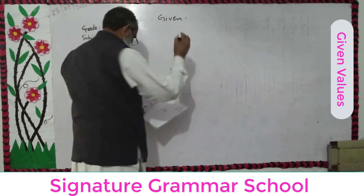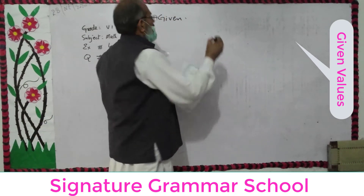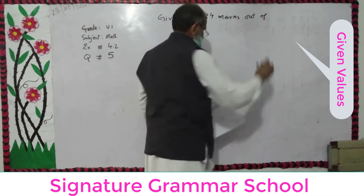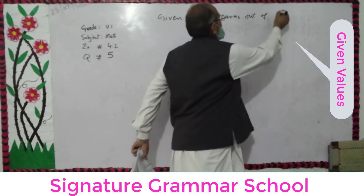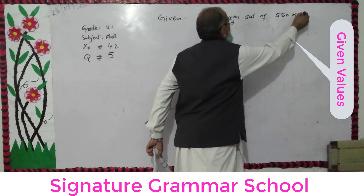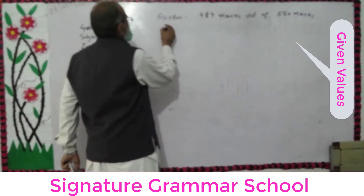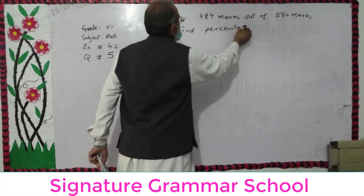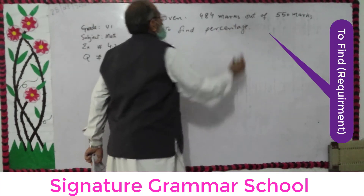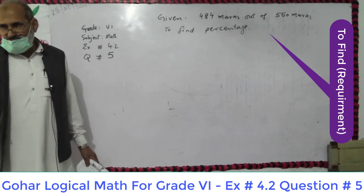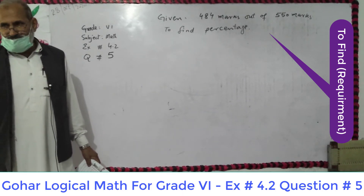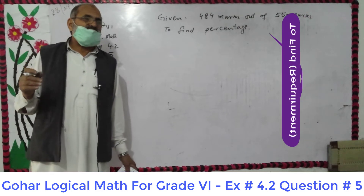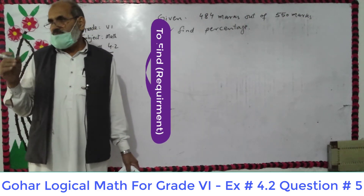Given: Sana got 484 marks out of 550 marks. The total marks were 550 and Sana got 484. The requirement is to find the percentage of her marks.